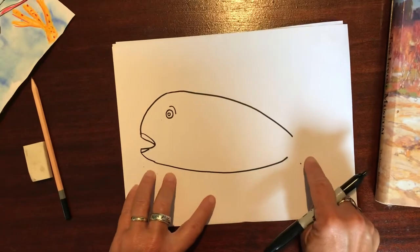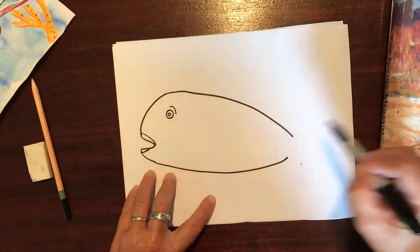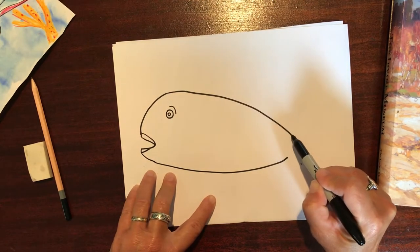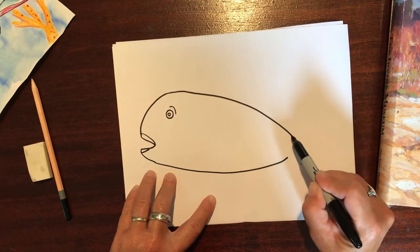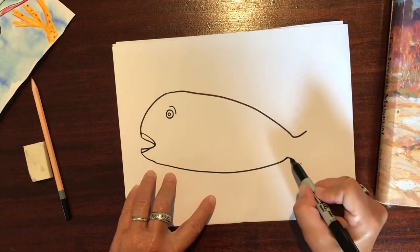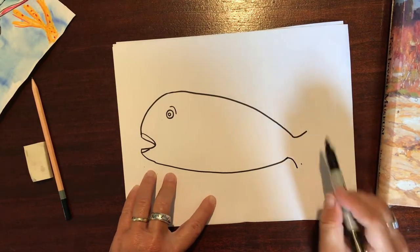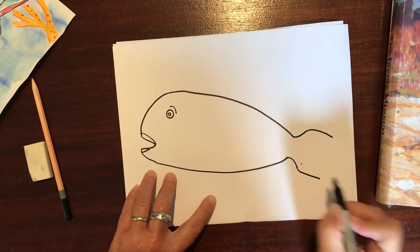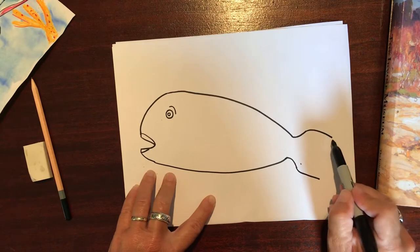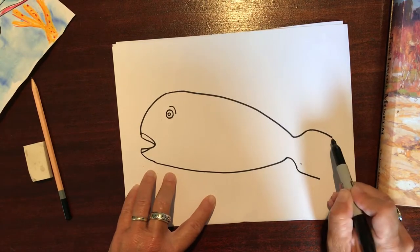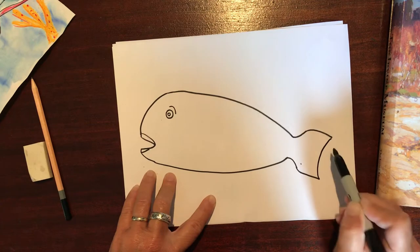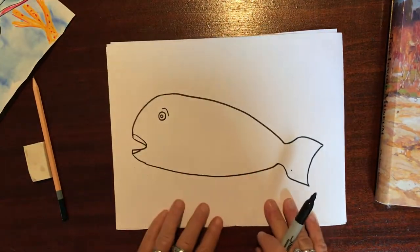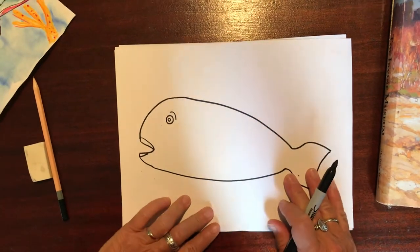So for your parrotfish tail, it has these two curves that go out a little different than the mahi we just did before. So I want to curve out, out, and then your line goes straight back from both of these. And then you just have a little kind of a gradual C, if you turned it this way it will be a U, and there we have our parrotfish body.